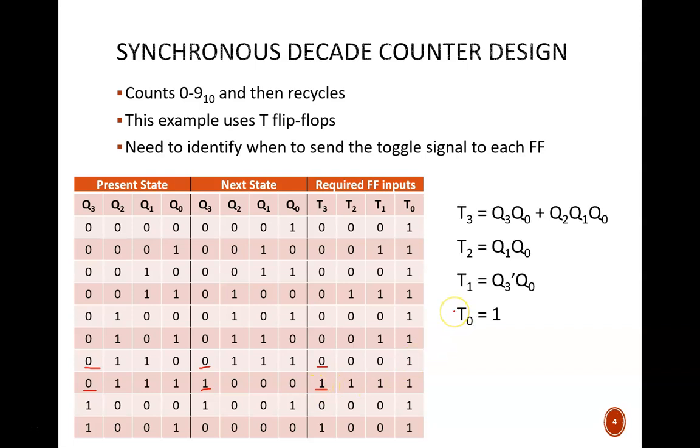From this table we can derive these equations which show t3 through t0 as functions of the present state q3 through q0. These equations are simplified by the fact that counts 10 through 15 are don't care states. Obviously, I went a little fast through this table and equation derivation. If you have questions, refer back to our Mealy and Moore machine lessons.